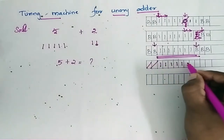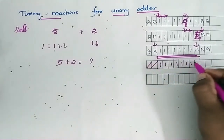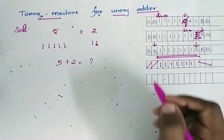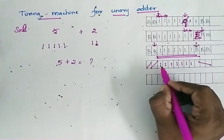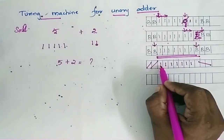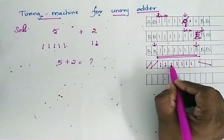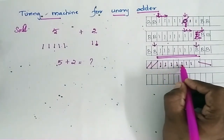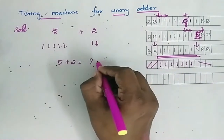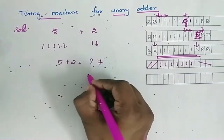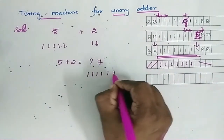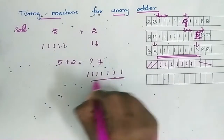The result is now visible on the tape: 1, 2, 3, 4, 5, 6, 7. So the result is 7, which is the unary equivalent of 5 plus 2.